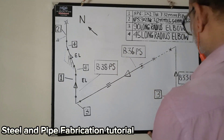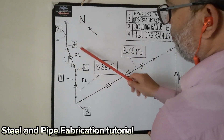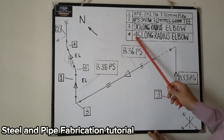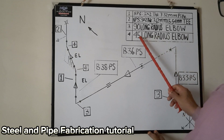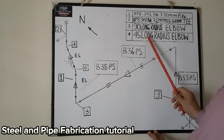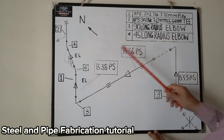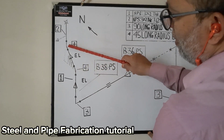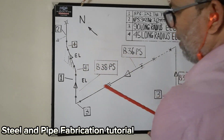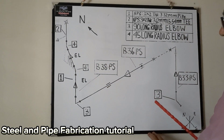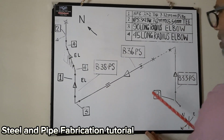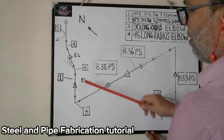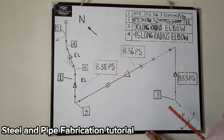Number four — number four has two materials, number four and number four. On the table, number four is written as 45 degree long radius elbow. So here have one 45 degree long radius elbow, and here also 45 degree long radius elbow. Now we already understand what material we use here for this spool fabrication.